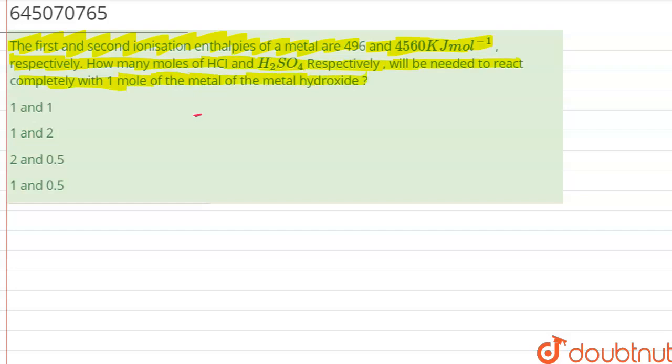So, we have been given that first ionization enthalpy is equal to 496. Second is given to us as 4560.